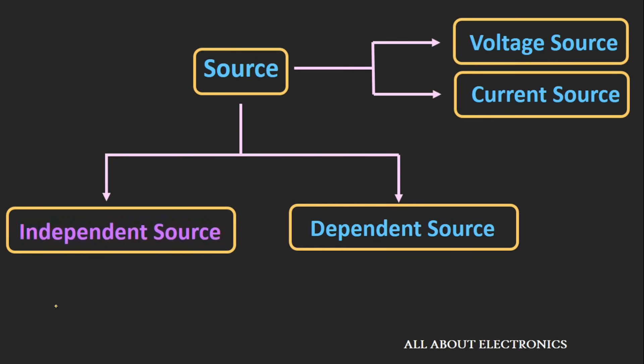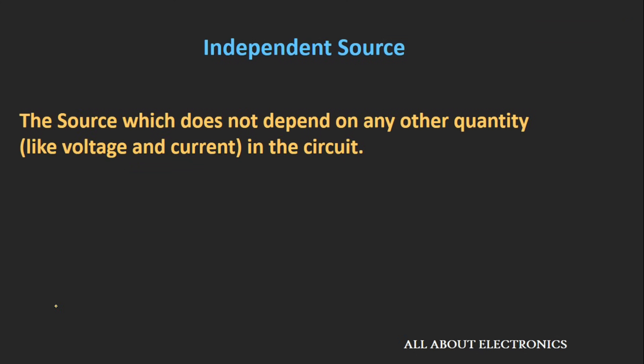Let's see first the independent sources. The independent sources are the sources whose value does not depend on any other quantity in the circuit, like voltage and current.